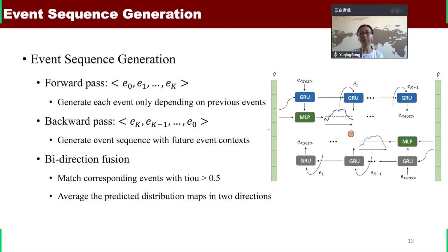However, in such forward pass, we only generate the event sequence depending on previous event information. The future events are also helpful for the current event prediction. Therefore, we train another event generator with the whole video reversed and generate the event sequence with future event contexts. Finally, we match the corresponding events in two directions and average their distribution maps to get the final event boundaries.